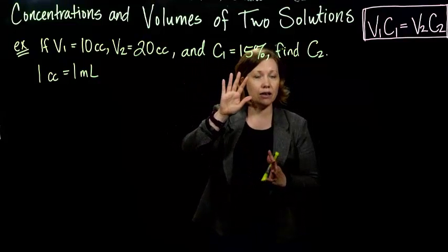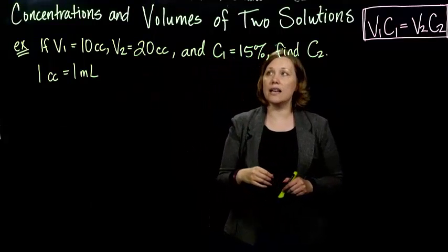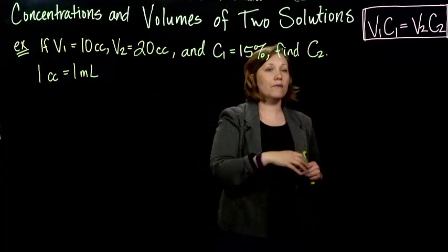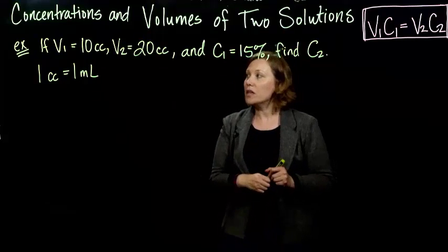So what was C1 again? Well, C is for concentrate, and the 1 tells us that it is before we diluted. They want us to find C2, which is the concentration after it's been diluted.